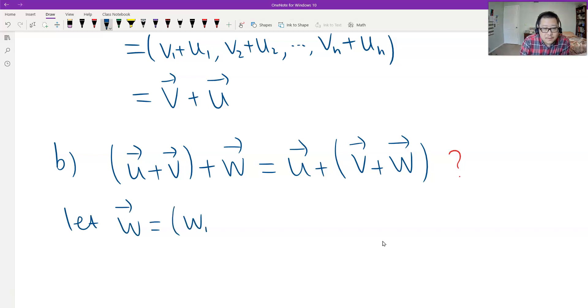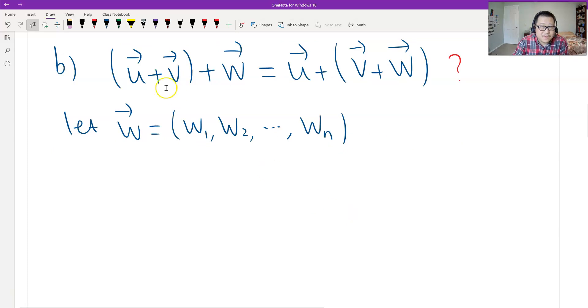u, v we already set up. So let's set up w. Let me say w is (w1, w2, ..., wn). And u, v is the same as the first.